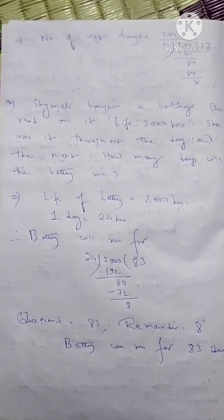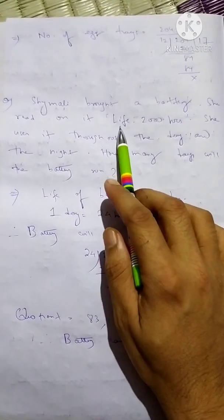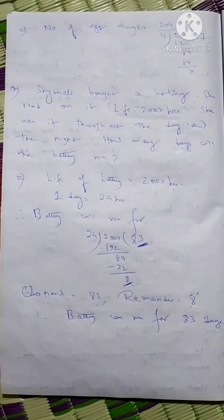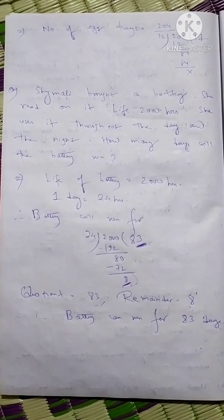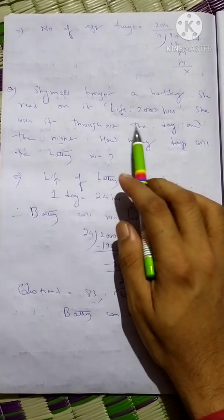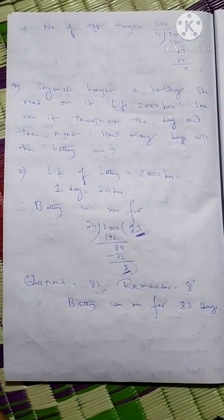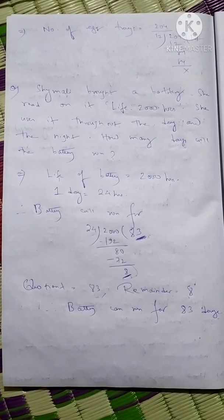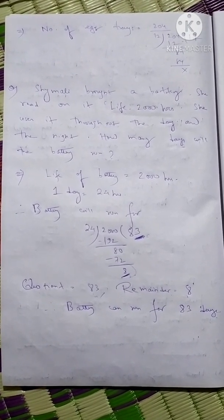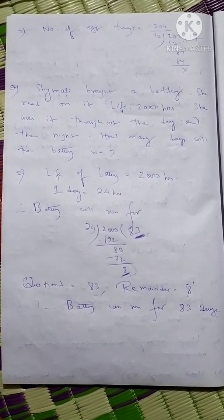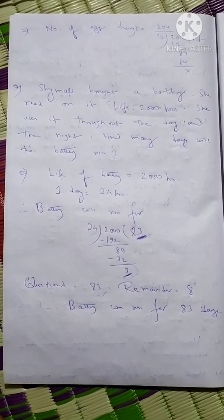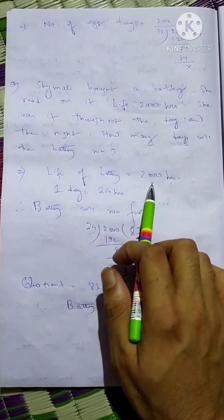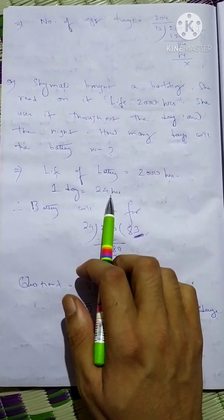Question three: Shamali bought a battery. She read on it 'life 2000 hours.' She uses it throughout the day and night. How many days will the battery run? The meaning of 'life 2000 hours' is that if used throughout the day and night the battery will run for 2000 hours before getting exhausted. Throughout the day and night means 24 hours. So: life of battery = 2000 hours, one day = 24 hours.